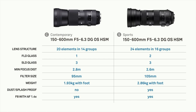Looking at the filter size: 95 millimeter on the Contemporary compared to 105 on the Sport. The dust and splash proofing is really where the Sport comes into its own and gets its name. If you're by a track in the rain, you'll be much safer with the Sport. However, we have a lot of customers who want to travel light, and the Contemporary is the perfect option for that — you shed almost a kilogram of weight.